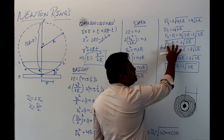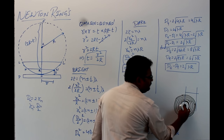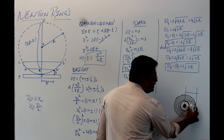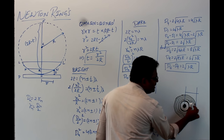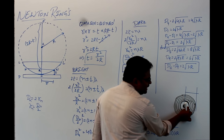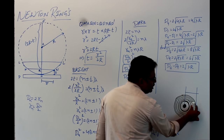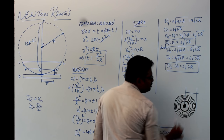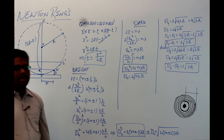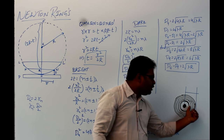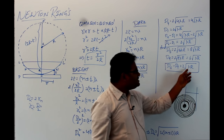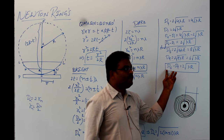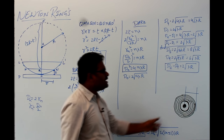This means that as you move from centre to the outer part, more rings are packed into the same gap, so the rings come closer to each other. Initially near the centre the gap between rings is large, but as you keep moving outward the gap between rings decreases. This explains why the rings are closely spaced when moving from the centre to the outer part.